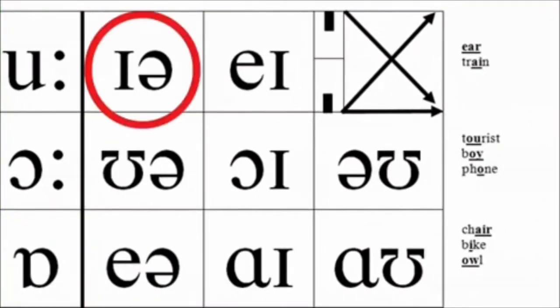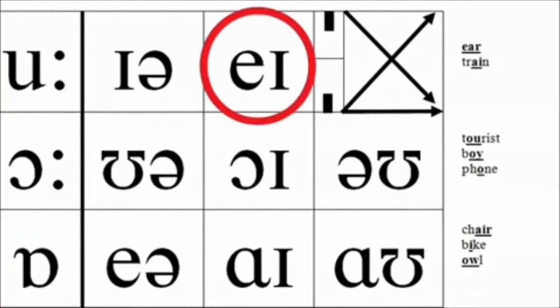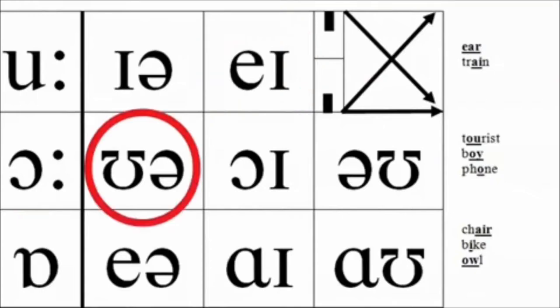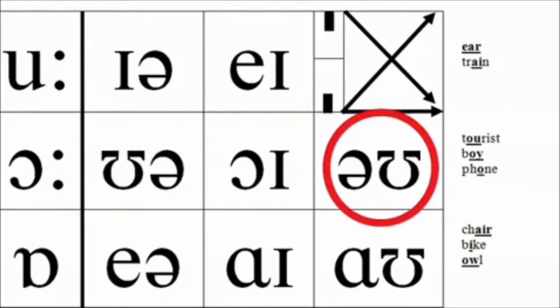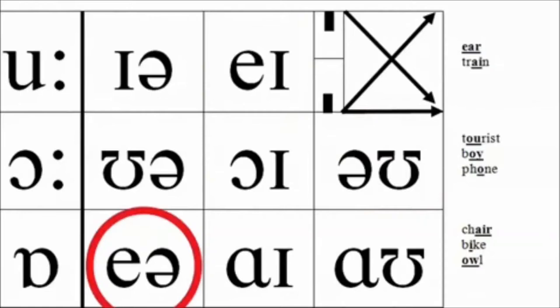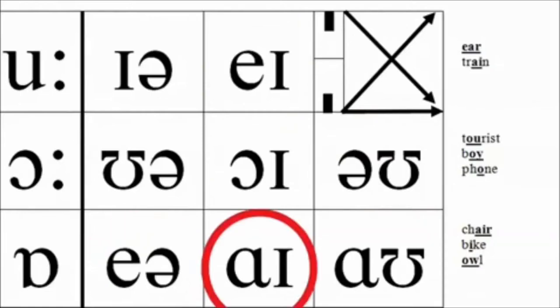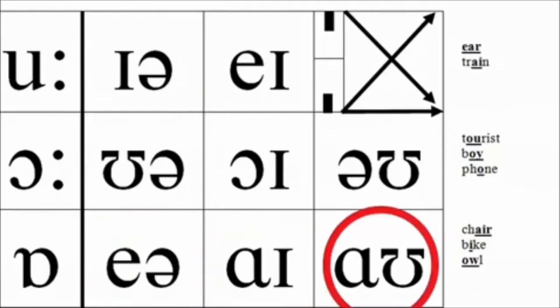ɪə ear. eɪ train. ʊə tourist. ɔɪ oi. əʊ phone. eə air. aɪ eye. aʊ owl.